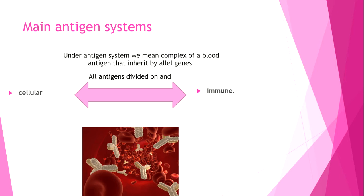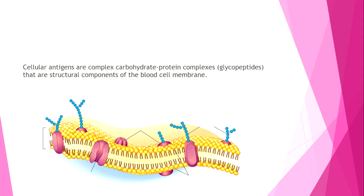We have two main antigen systems. Under antigen systems, we mean a complex of blood antigens inherited by many genes. All antigens are divided into cellular and immune antigens. Cellular antigens are on the surface of red blood cells and immune antigens are placed in the plasma. Cellular antigens are complex carbohydrate-protein or glycopeptides that are structural components of the blood cell membrane — carbohydrates connected to protein, placed on the phospholipid barrier of the cell membrane.